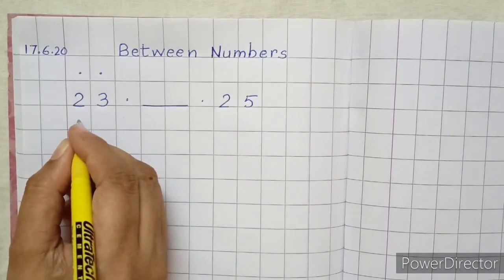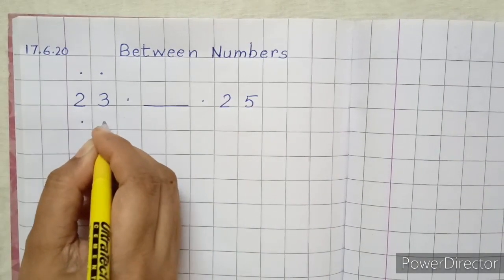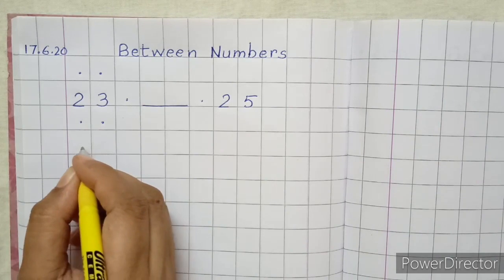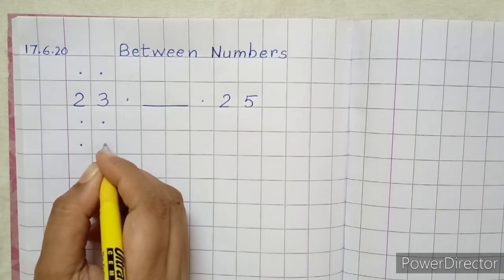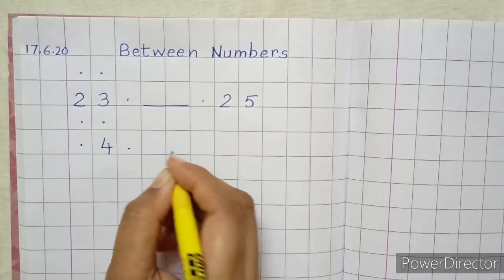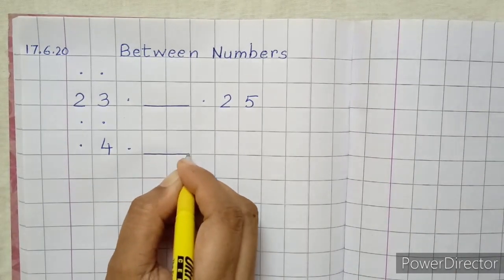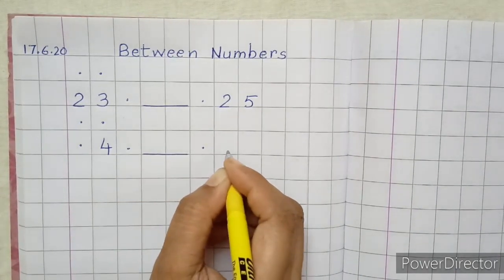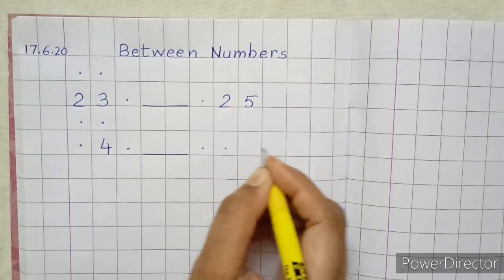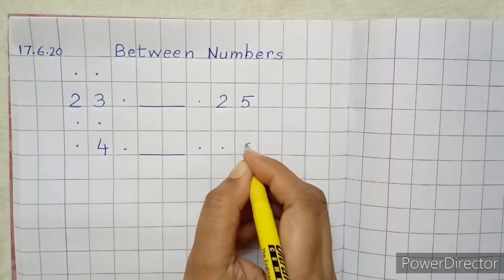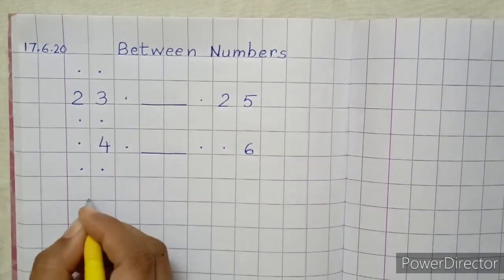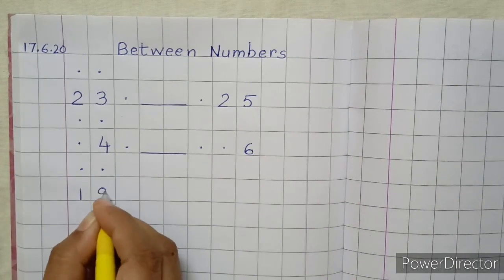Again, below twenty-three, put two dots. And again below that, I am going to write a single number, so I have to put one more dot. Write four. Put a single dot. Dash in two boxes. Dot. Again, I am going to write a single number, so I will put a dot below the tens place and write six below the ones place.